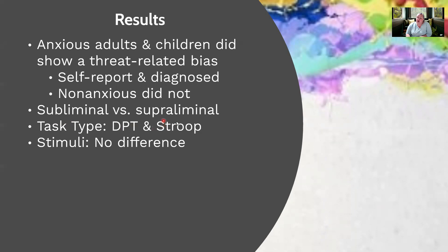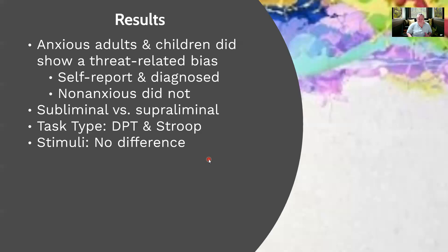They looked at subliminal versus conscious (supraliminal) stimulus — meaning how long the stimulus was on the screen — and did not find a significant difference, though the longer conscious stimulus duration showed a slightly larger effect. Task type findings showed that the dot probe task and the emotional Stroop had the largest effect, though they noted that for the emotional spatial cueing test, only four articles had used it, so it may not have been a fair comparison. As for stimuli — words versus pictures versus pictures of faces — they found no significant difference. It didn't matter if researchers were using words, pictures, pictures of faces, or pictures of scenery.